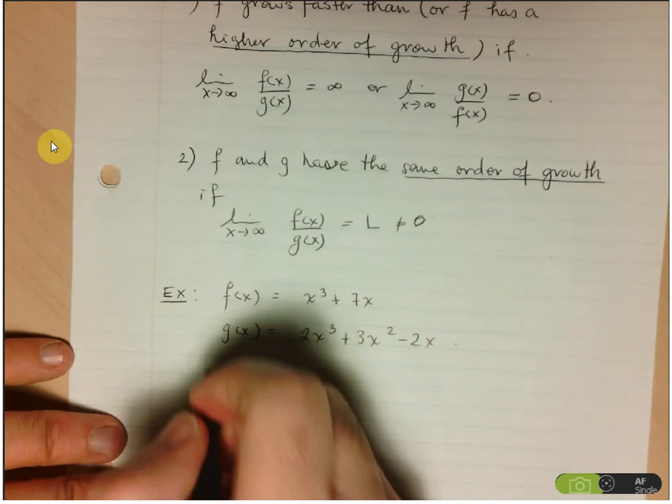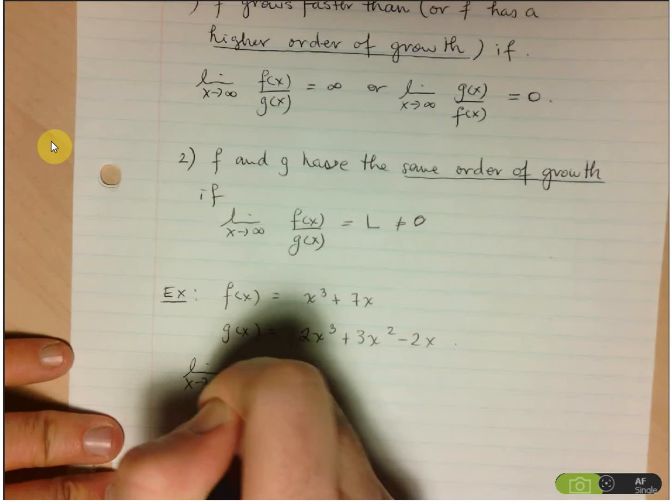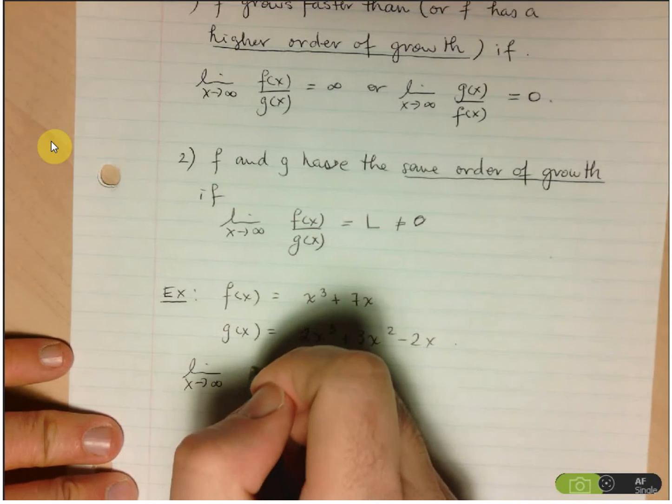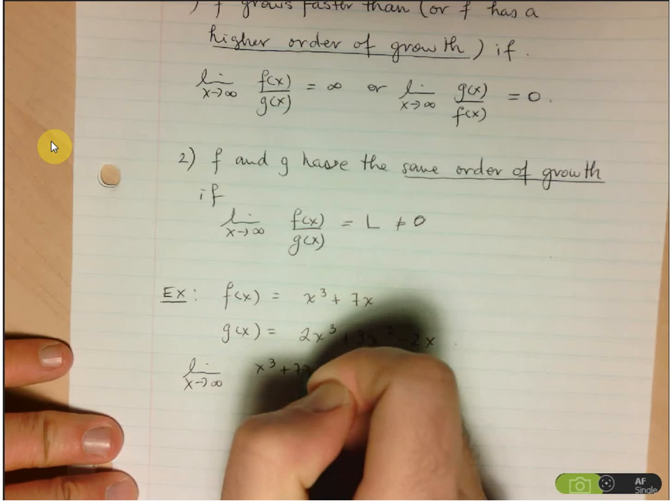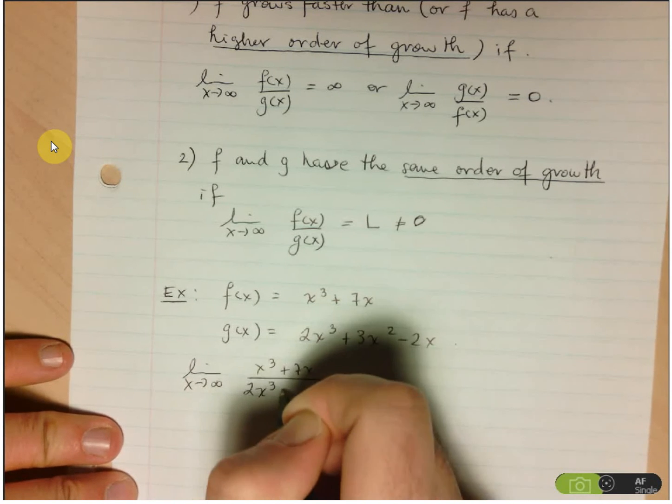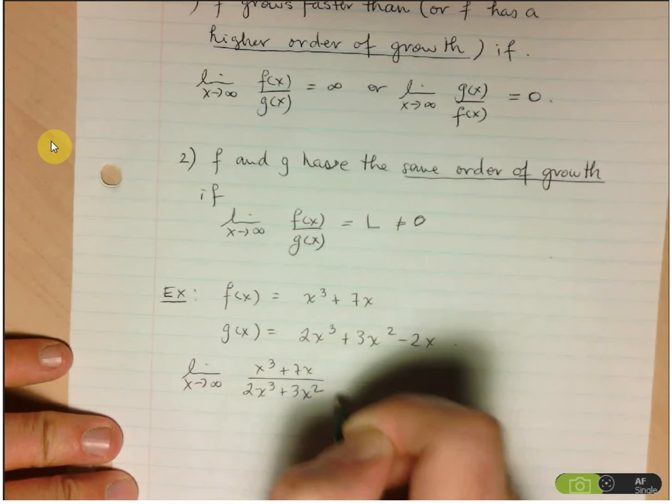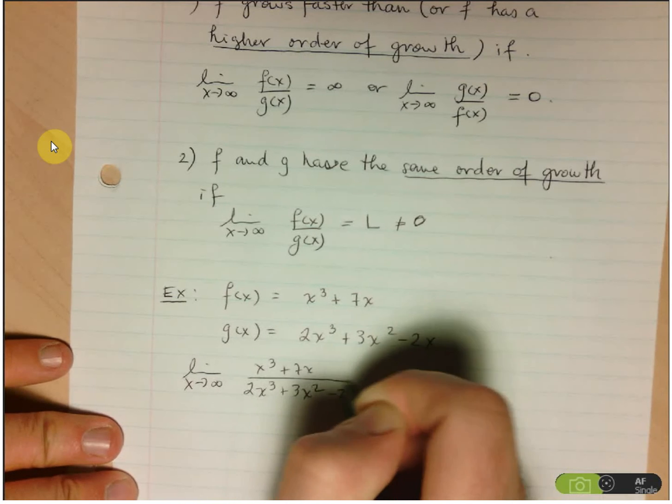In order to compare the orders of growth, what you'll do is you'll take the limit as x goes to infinity of x cubed plus 7x over 2x cubed plus 3x squared minus 2x.